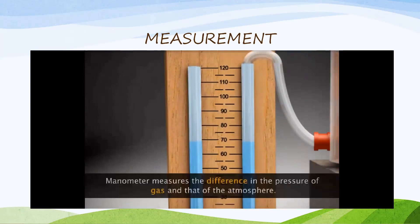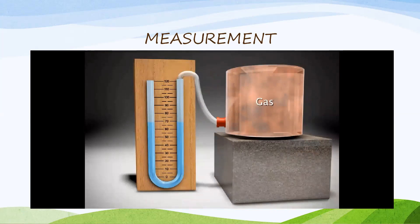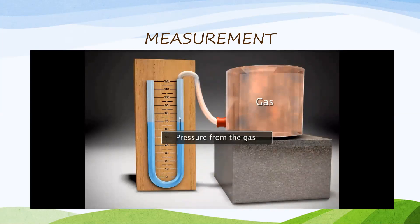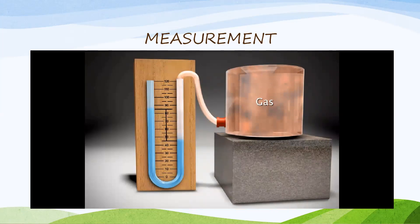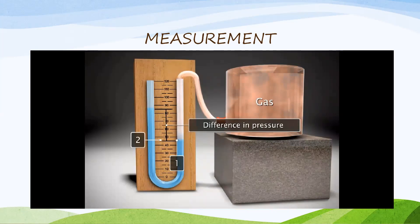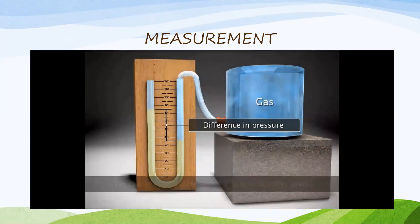There is another device called a U-tube manometer, which can be used to measure the difference in pressure between a gas and the atmosphere. A gas is filled in a container and connected to the U-tube manometer. Due to the pressure from the gas, the liquid level will show a difference corresponding to the difference between atmospheric pressure and gas pressure. There will be a height difference H in the liquid column, and the pressure can be calculated using the formula: pressure equals H × rho × g — that is, height times density of the liquid times acceleration due to gravity. You will study this formula in higher classes.